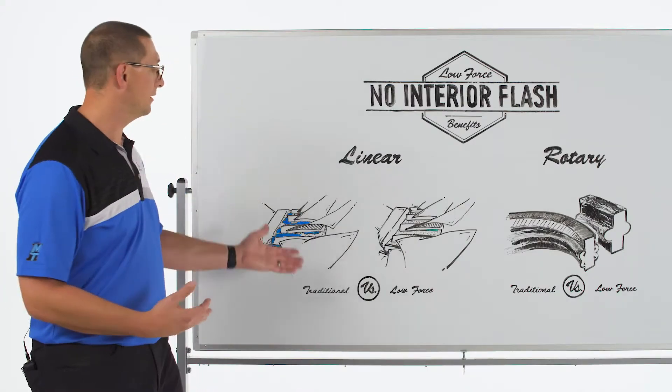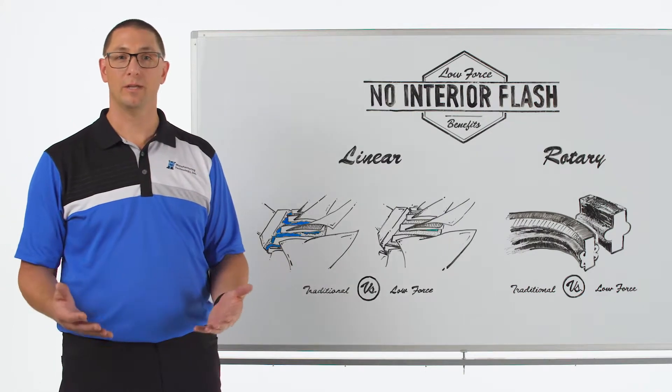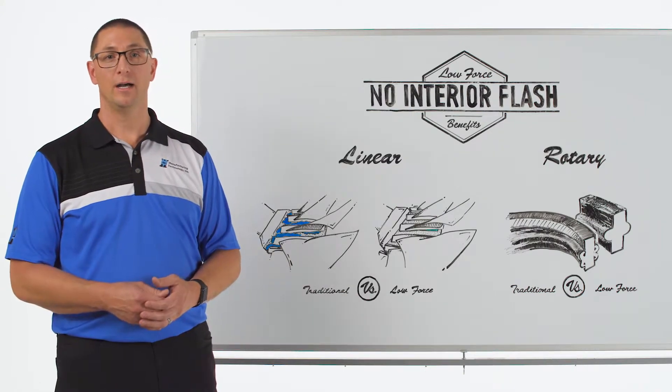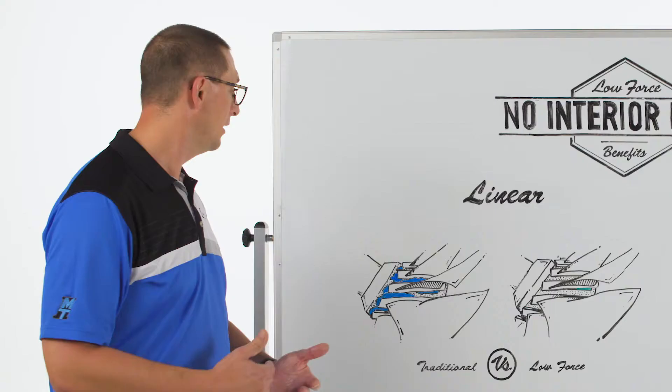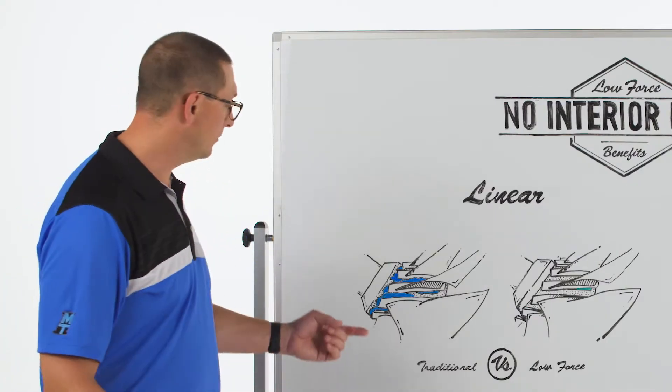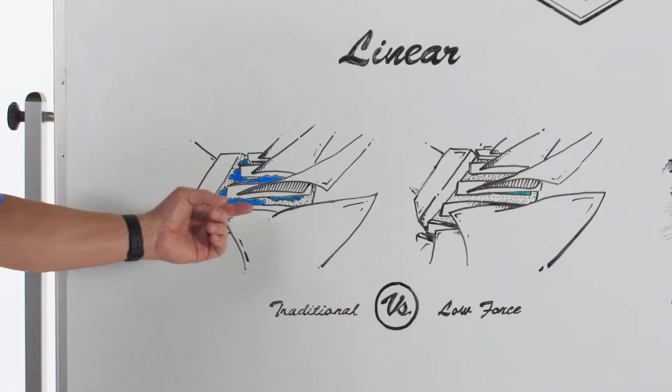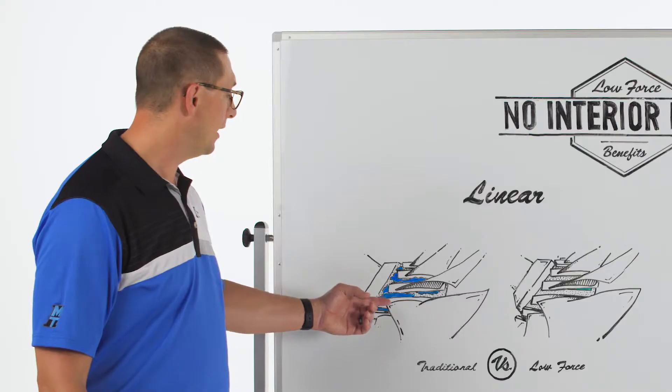The first one is in linear friction welding. The traditional application for linear friction welding is titanium blisks. We're welding a blade to a disc or a bladed disc. When we do this in titanium we get a ribbon of flash that forms that is very jagged.